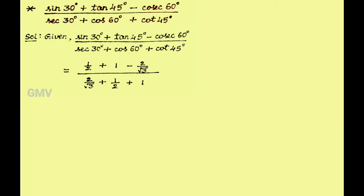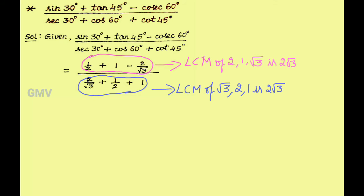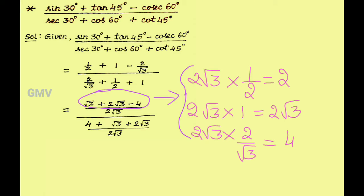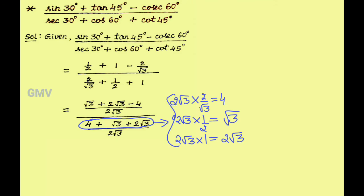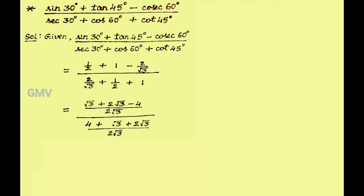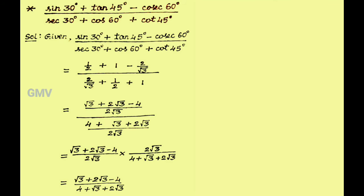Now we have to simplify this. In the numerator 2 root 3 is the LCM, so we get root 3 plus 2 root 3 minus 4 divided by 2 root 3, whole divided by 2 root 3. Again 2 root 3 is the LCM in the denominator, so we get 4 plus root 3 plus 2 root 3 whole divided by 2 root 3. Now we have to convert the division by taking the reciprocal of the denominator. Then we get root 3 plus 2 root 3 minus 4 divided by 2 root 3, into 2 root 3 divided by 4 plus root 3 plus 2 root 3. Now 2 root 3 and 2 root 3 get cancelled, so we get root 3 plus 2 root 3 minus 4, whole divided by 4 plus root 3 plus 2 root 3.